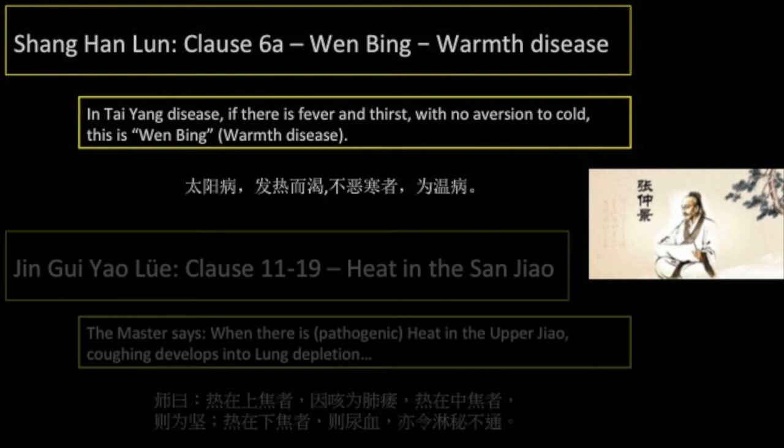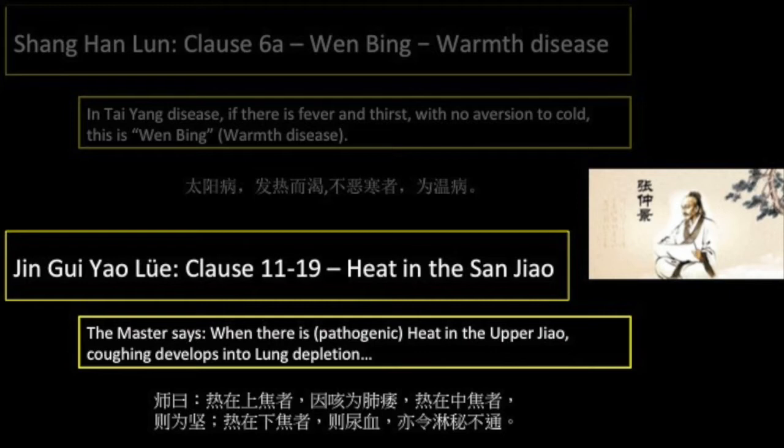There is also a specific reference to Sanjiao or triple burner differentiation in the Jingui Yaolue. In chapter 11, the master says: when there is pathogenic heat in the upper jiao, coughing develops into lung depletion; when there is heat in the middle jiao, there will be hardness; when there is heat in the lower jiao, there will be blood in the urine, with disturbance and retention.